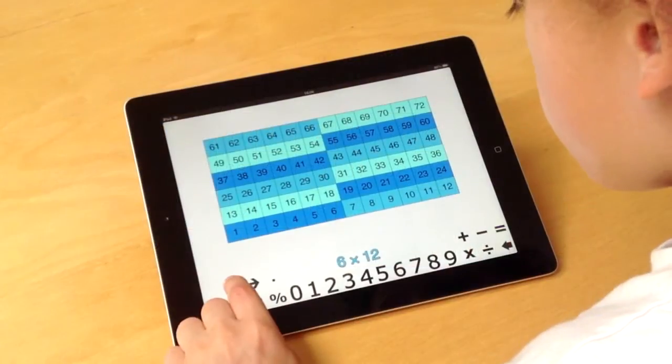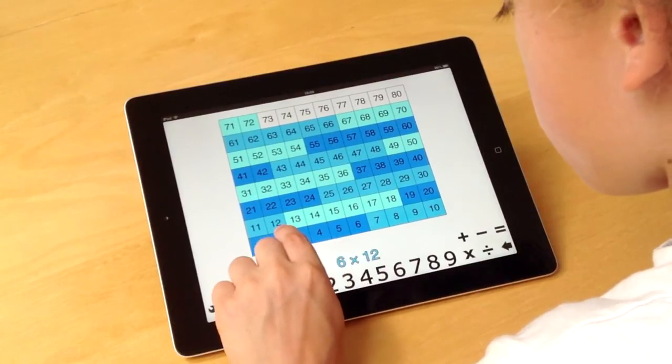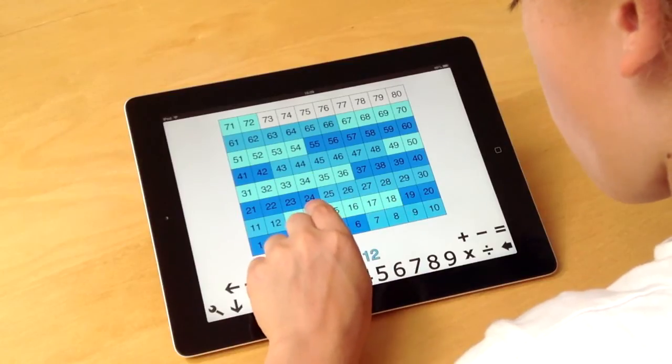Now we are going to a row length of ten and you'll find it harder. Don't worry, just go really slowly and as you say the numbers, you can use the colour groups to help you.